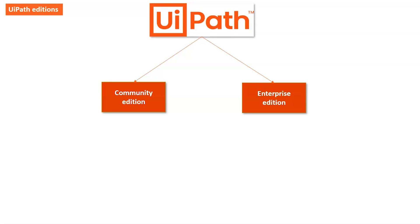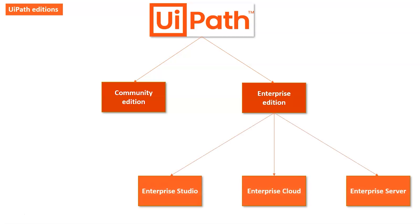Community Edition is for developers and small teams who are just starting on their automation journey. The Enterprise Edition is further classified into three types: Enterprise Studio Edition, Enterprise Cloud Edition, and Enterprise Server Edition. Enterprise Studio Edition is for individual enterprise developers who want to experiment with UiPath Studio. Enterprise Cloud is a cloud-based deployment of the entire RPA enterprise platform for any size business. Enterprise Server is an on-premises deployment for the entire enterprise automation platform for large-scale businesses.